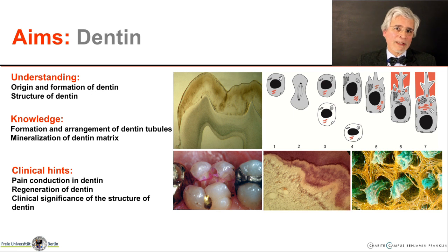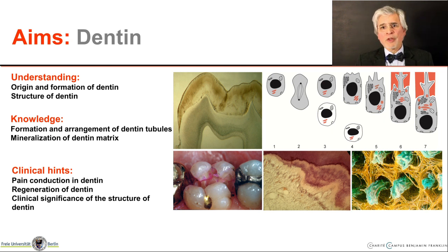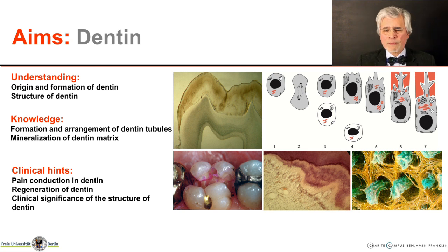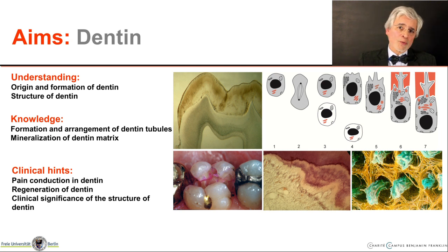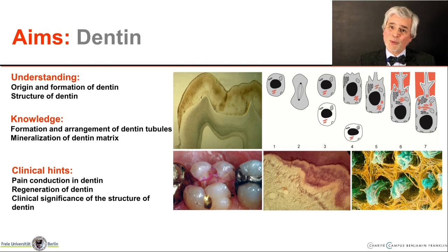As learning objectives, we want to contribute to the understanding of the origin and formation of dentine and the structure of dentine. We want to go into the formation of the shape of dentine, the arrangement of the dentine tubules, other structural features of dentine, and the processes involved in matrix mineralization, which take place differently from the formation of tooth enamel.